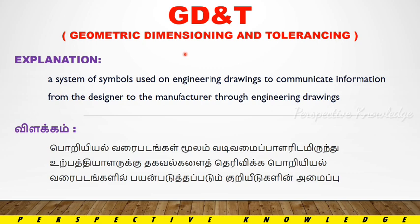We can understand the path using GD&T symbols. For example, if we have a circle, there is a symbol in different languages, but in engineering we can understand the technique through the symbol. We can understand the circle and the path easily. That is why we use GD&T for easy communication.